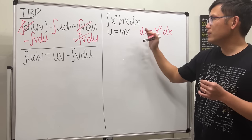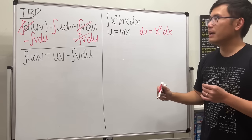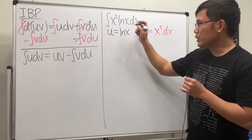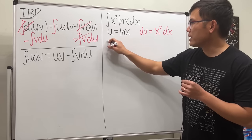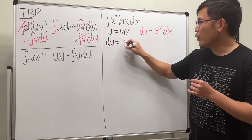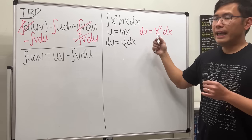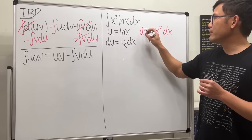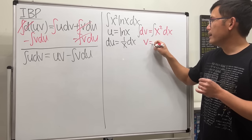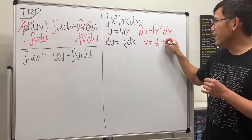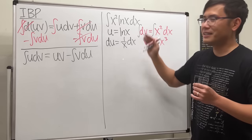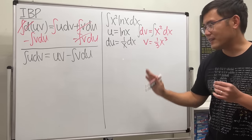So we set u = ln x and dv = x² dx. Differentiating u gives du = (1/x) dx. Integrating dv gives v = (1/3)x³. Don't worry about the plus C — just add that at the final answer.